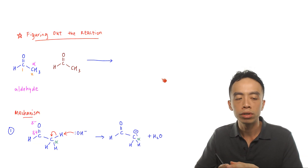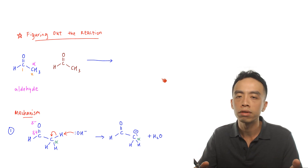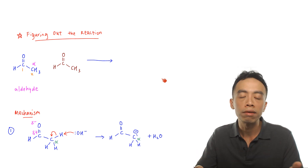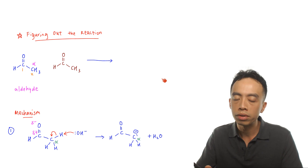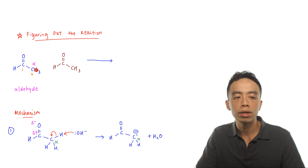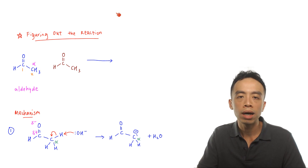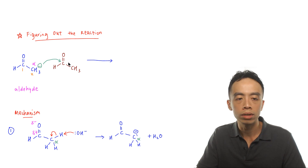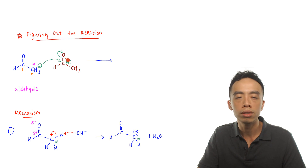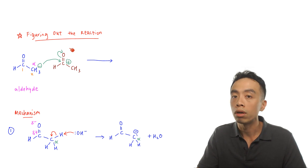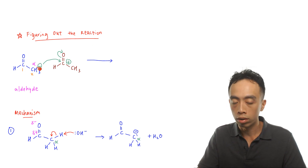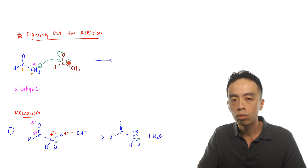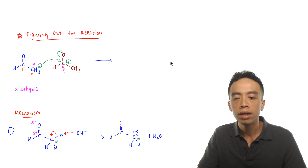Coming back to the reaction — if ethanal reacts with ethanal, what is the product? Under exam conditions we don't need to draw the full mechanism. We just need to understand that the alpha carbon of one molecule loses a H⁺ to become a nucleophile, attacks the carbonyl carbon of the other molecule, the C=O becomes C–O⁻, then picks up H⁺ to become an alcohol. The bond formed is between the alpha carbon and what becomes the beta carbon.